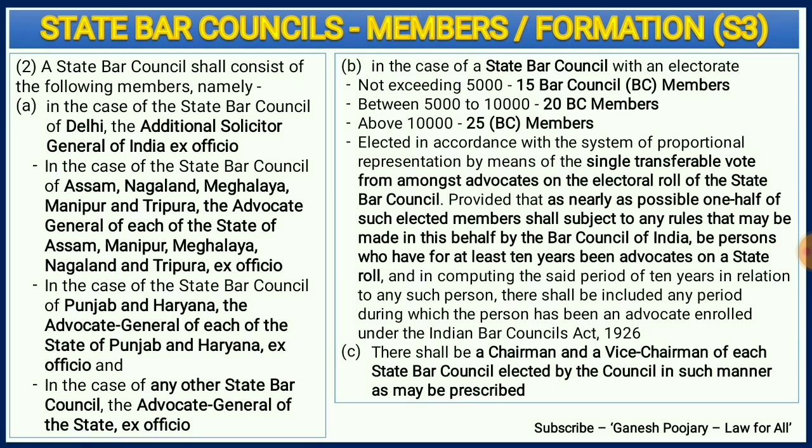Once after the election of 15, 20, or 25 members, among the elected members, those elected members will elect a chairman and a vice chairman as prescribed in their state bar council. There will be one ex officio member as discussed under section 3(2)(a), the number of members selected based on total members under section 3(2)(b), and then among the elected members they elect a chairman and vice chairman. This is how the members and formation of a state bar council is done.